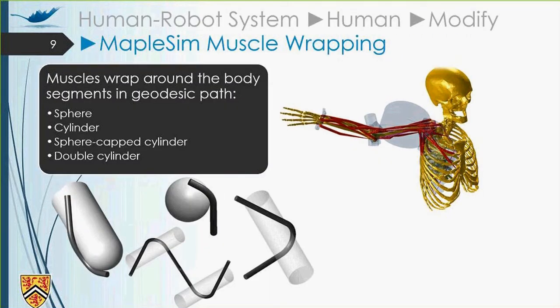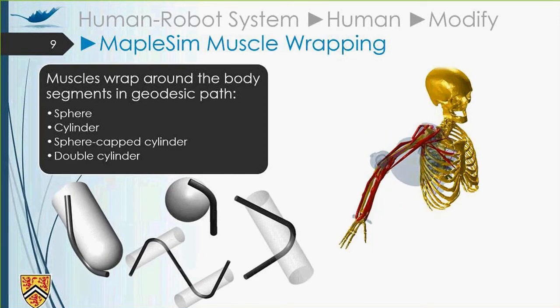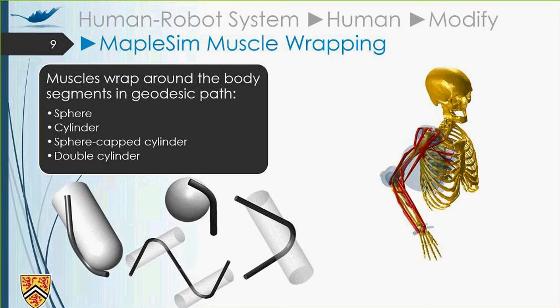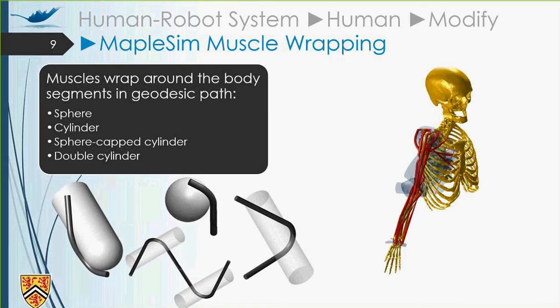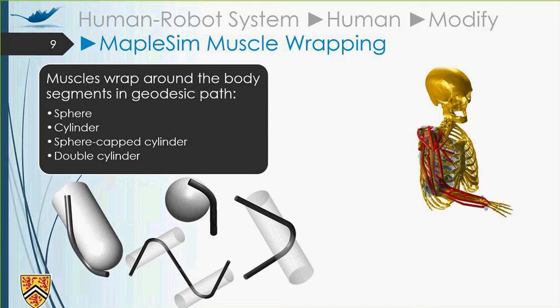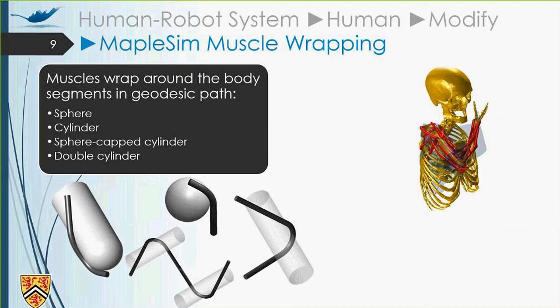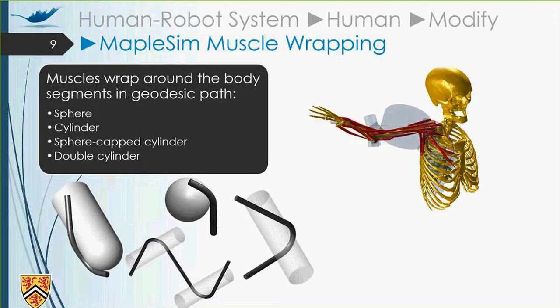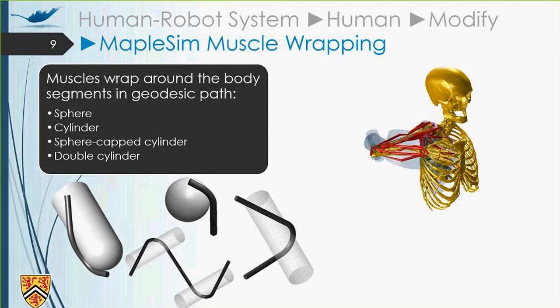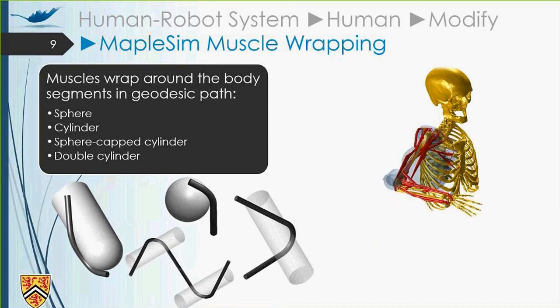So let's talk about the muscle wrapping. Muscle wraps around the body segment in geodesic path. It means that the muscle goes around the body segments, which can be modeled as simple shapes, like a sphere cylinder, a sphere cap cylinder, or double cylinders, in shortest paths. You can see in the figure below different types of the wrappings on these geometries. And on the right, you can see our implemented model inside the MapleSim, that the model goes inside its workspace, and the muscles are wrapping on different geometries defined based on the Garner and Pandey's model.